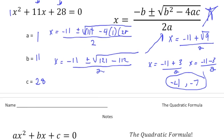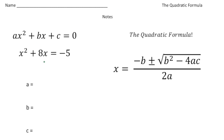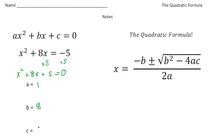Let's turn the page and try the second problem. Here we have x squared plus 8x equals negative 5. I'm going to first add 5 to both sides to put it in standard form. So now we end up with x squared plus 8x plus 5 equals 0. From that, we know the a value is going to be 1, our b value is going to be 8, and our c value is going to be positive 5. Now let's plug it into the formula.